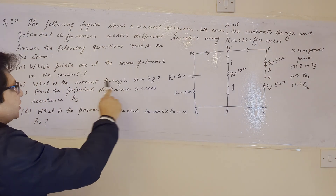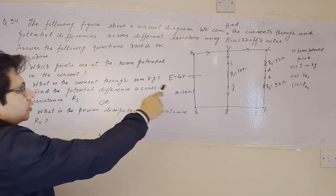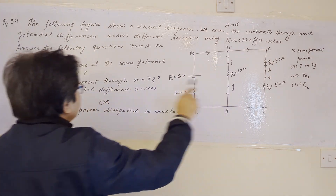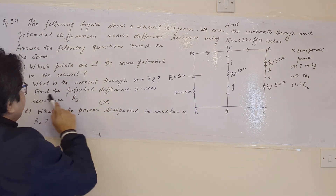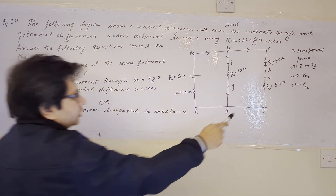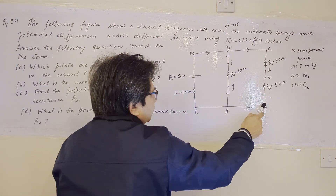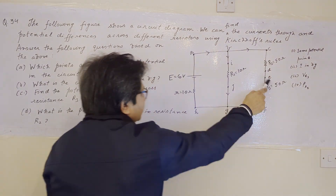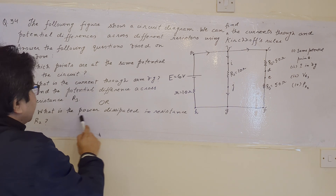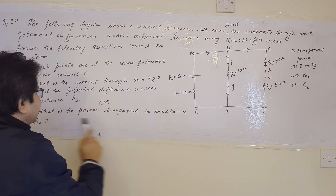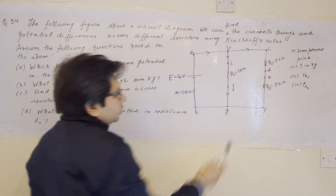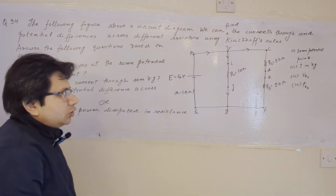Part B: what is the current through arm BG? Part C: find the potential difference across resistance R3. Part D: what is the power dissipated in the resistance R2?